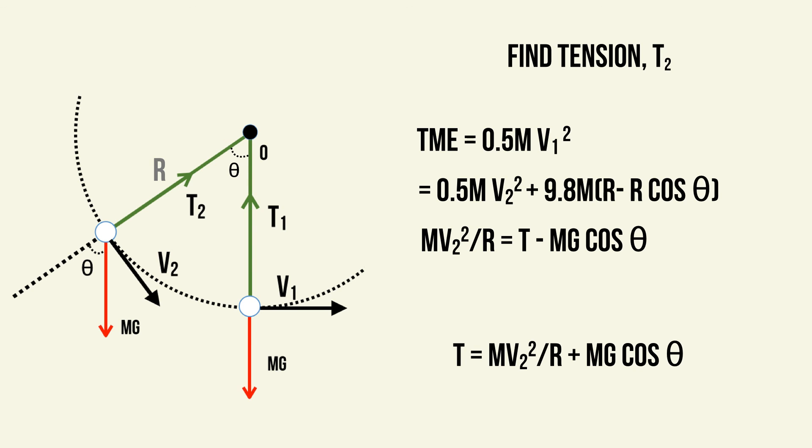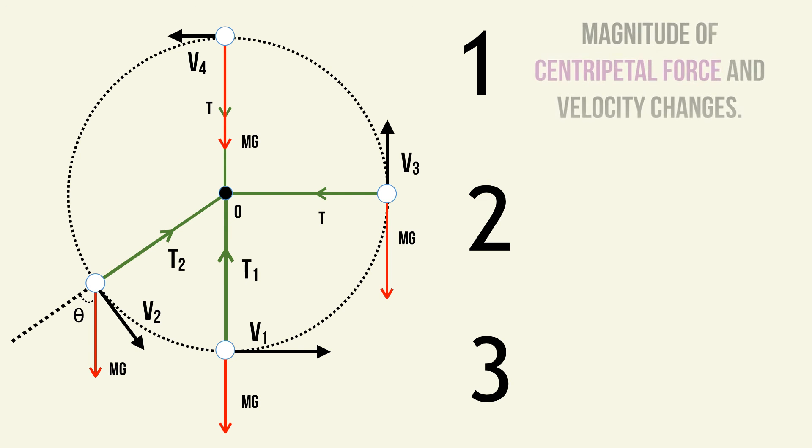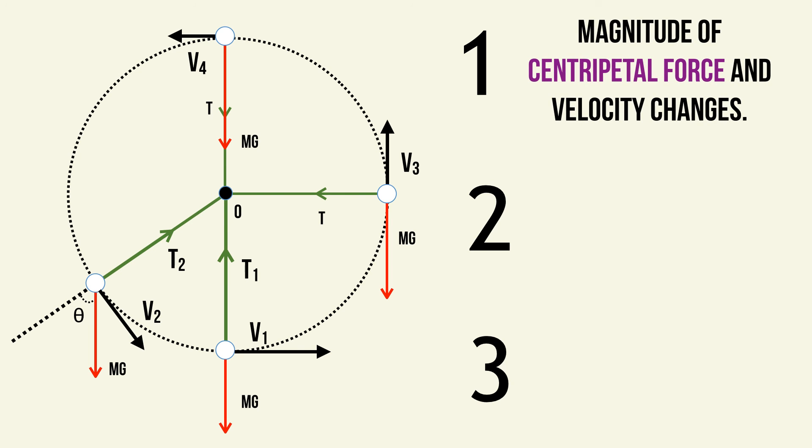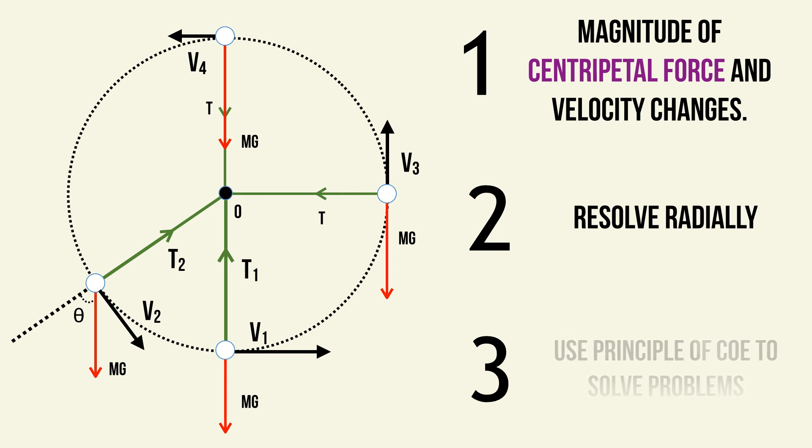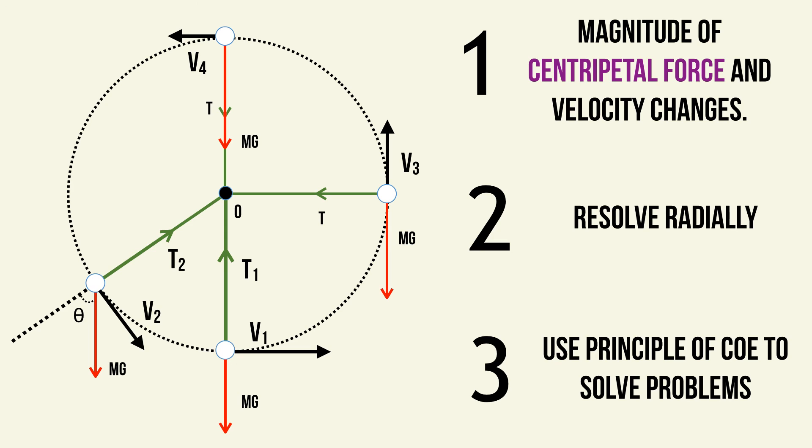Here are some key tips to finish off this video. The magnitude of the centripetal force and tangential velocity always change around the circle. You must be able to resolve radially — this is the most important skill in vertical circular motion. And you must use the principle of conservation of energy, combined with resolving radially, to solve problems. Thank you very much for watching. Please watch Part 1 of vertical circular motion, and stay tuned for Part 3 covering more applications.